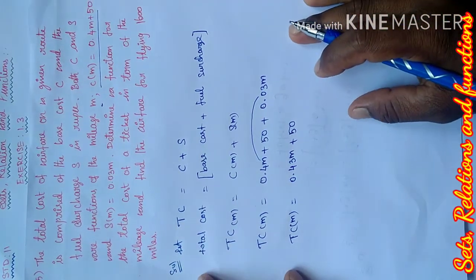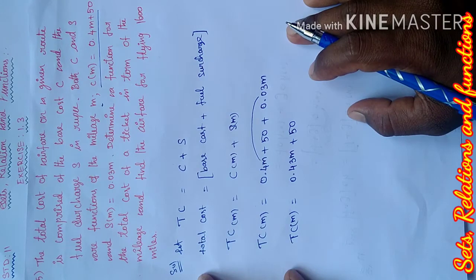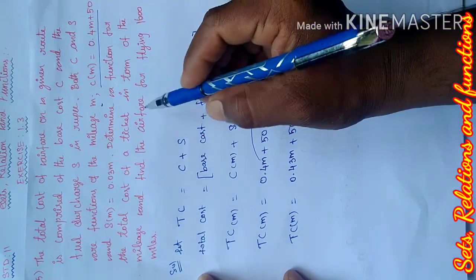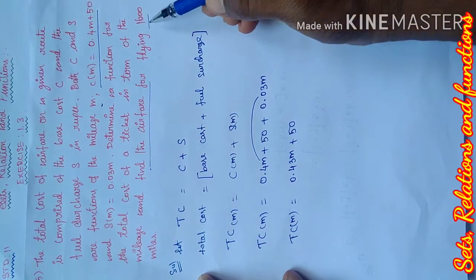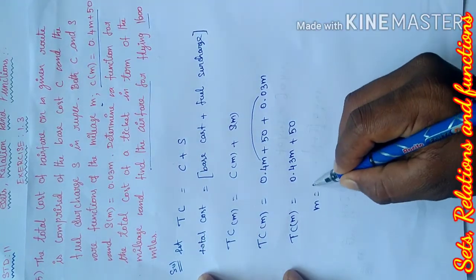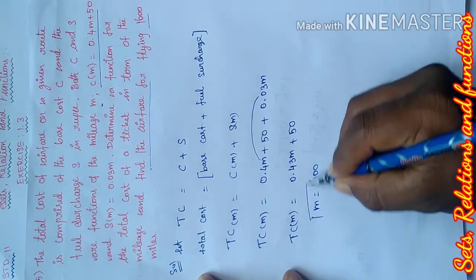Now, find the airfare for flying 1600 miles. If M equals 1600 miles, then we apply.